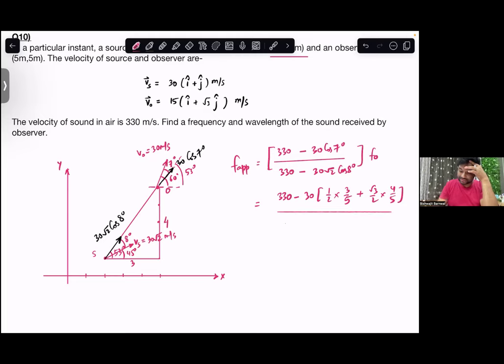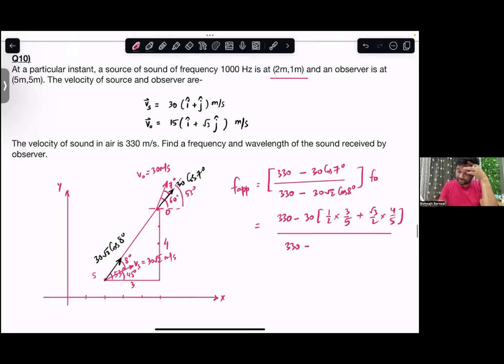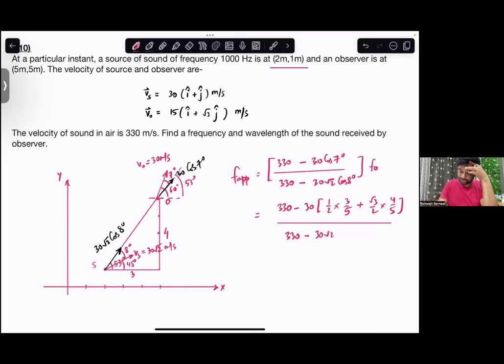Divided by 330 minus 30 root 2 cos 8 degrees. Cos 8 degrees can be written as cos 53 minus 45, so this will be cos a cos b plus sin a sin b. Cos 53 is 3 by 5 into 1 by root 2, plus 4 by 5 into 1 by root 2.